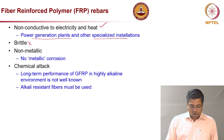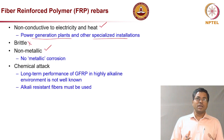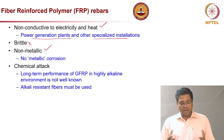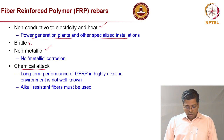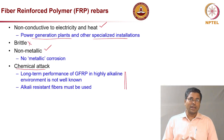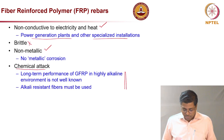Advantages of FRP rebars: they are non-conductive, making them good for applications in power generation plants and specialized installations where electric short circuits are a concern. They are non-corroding in terms of metallic corrosion. However, the brittleness is a disadvantage. If corrosion is defined as material loss rather than just metal loss, then chemical attack must also be considered — specifically the attack due to the highly alkaline environment in concrete and moisture present in concrete.